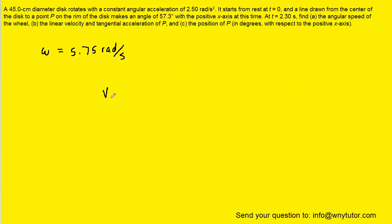For part B, to find the linear velocity, that's the same thing as the tangential velocity. So we simply take the radius and multiply it by the angular velocity. Now the radius needs to be determined by taking half of the diameter, so that's going to be 22.5 centimeters. We also have to make sure we convert that into the standard unit of meters. We know that one meter is 100 centimeters.